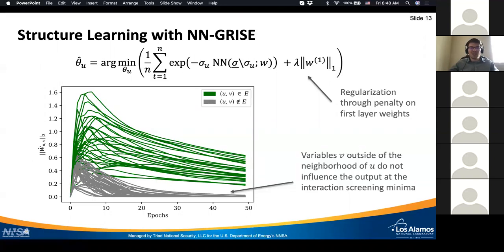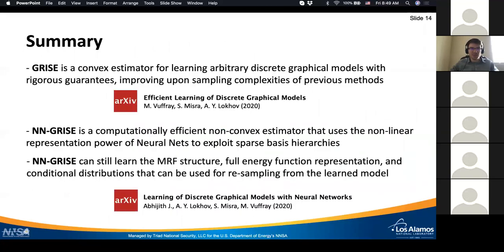This is the illustration of this procedure on a graph where you see that the edges that are not present in the graph, the corresponding weights are set to zero during the learning phase, and the couplings that are present, the edges that are present, they remain in this representation. We can do structure learning with the neural network representation of the basis function.